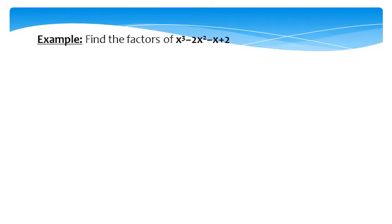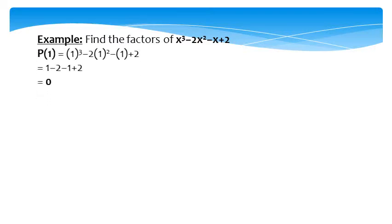Example: find the factors of x³ minus 2x² minus x plus 2. The highest power of the polynomial is 3. The constant term is 2, and the divisors of 2 are plus or minus 1 and plus or minus 2.